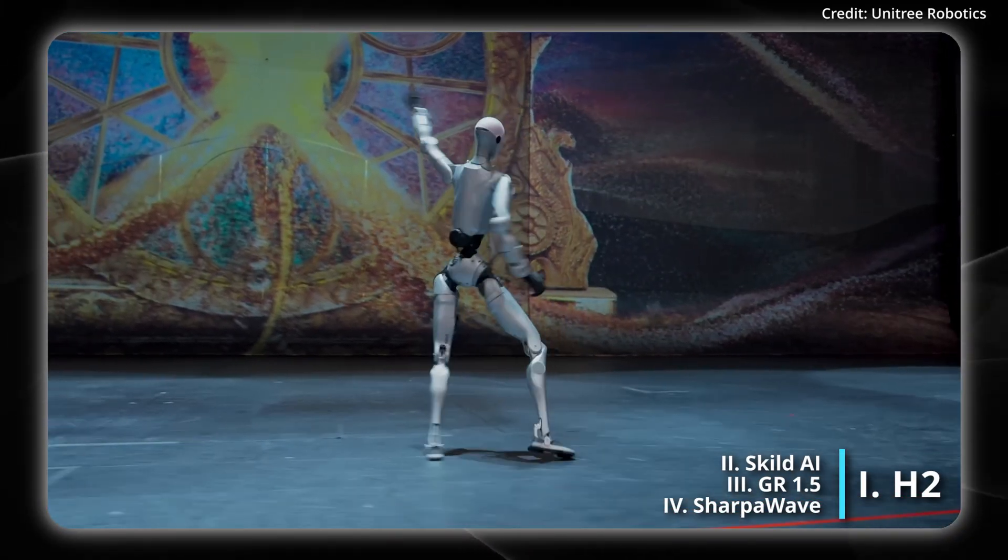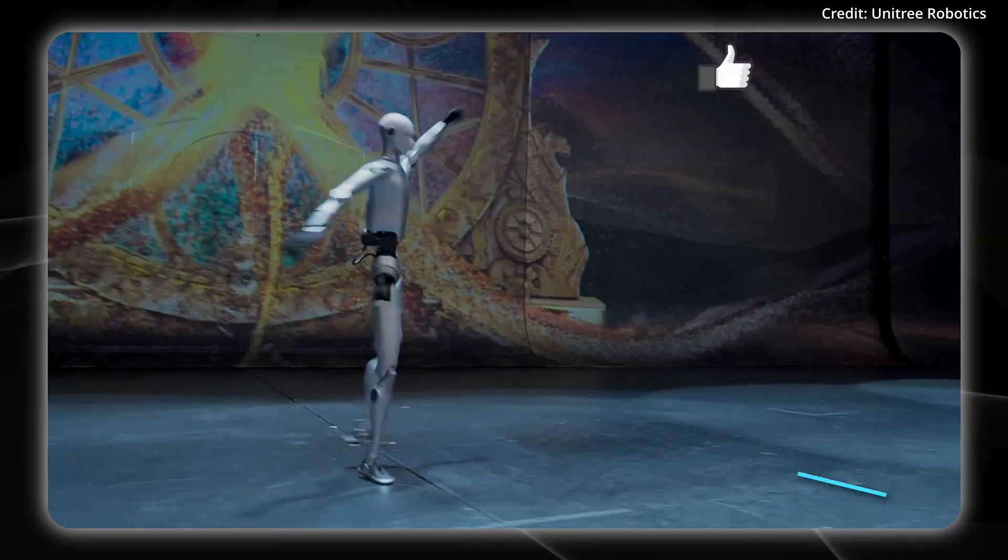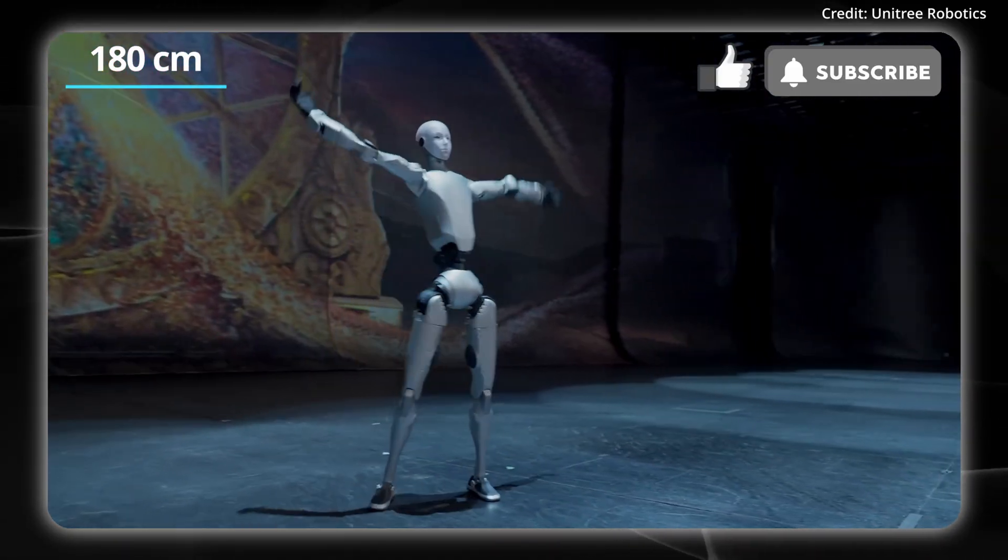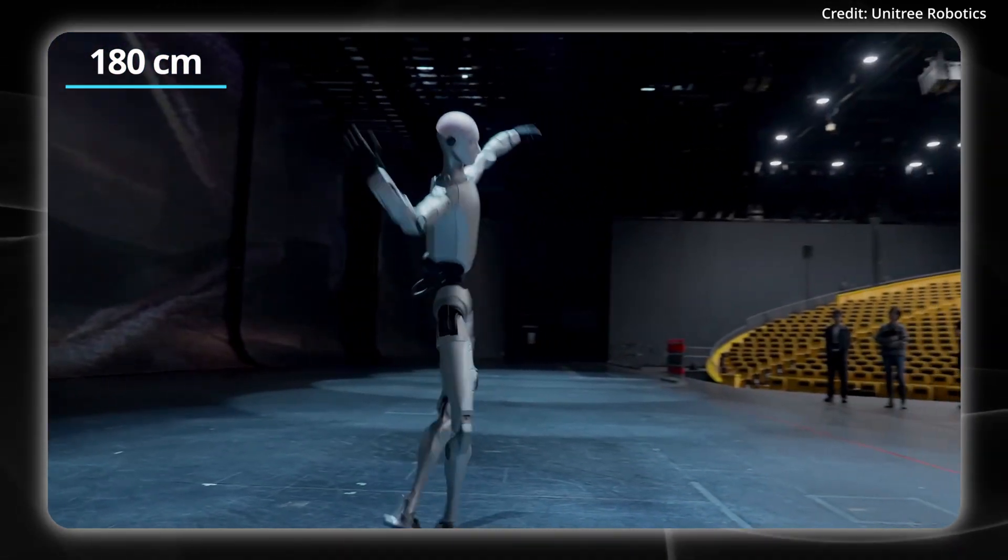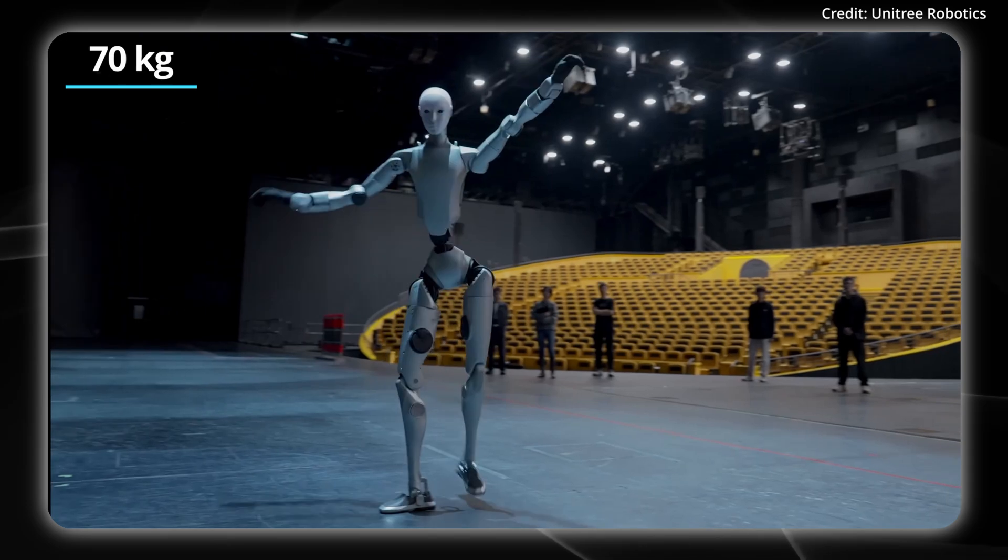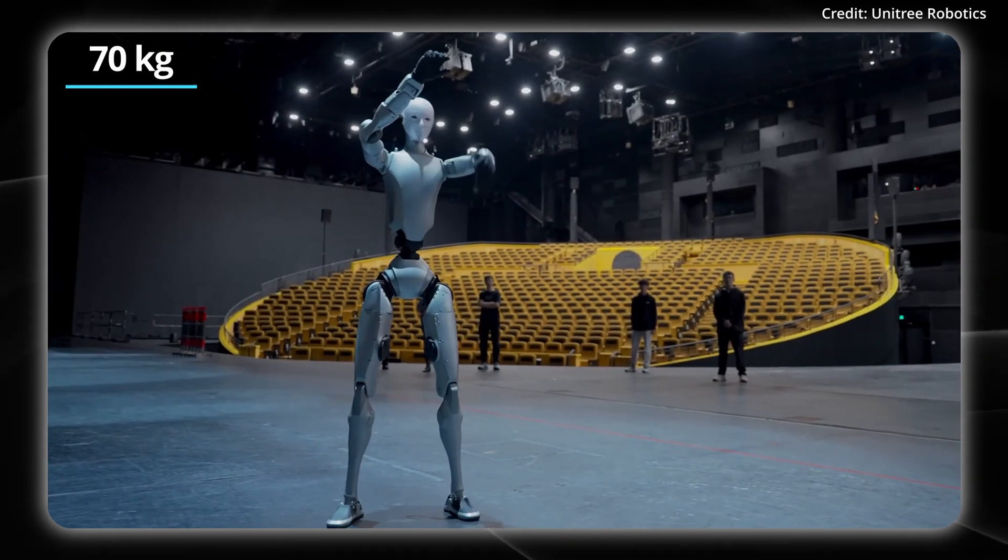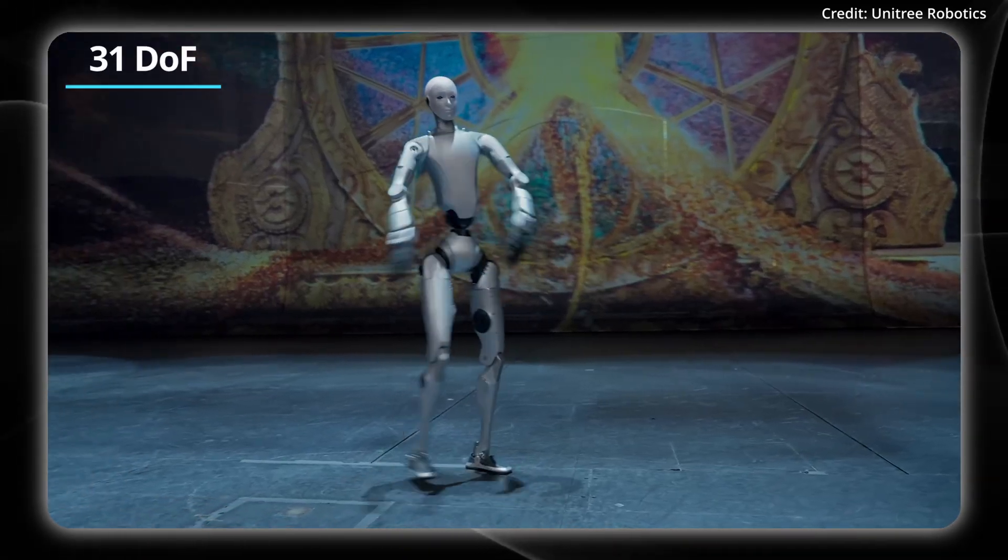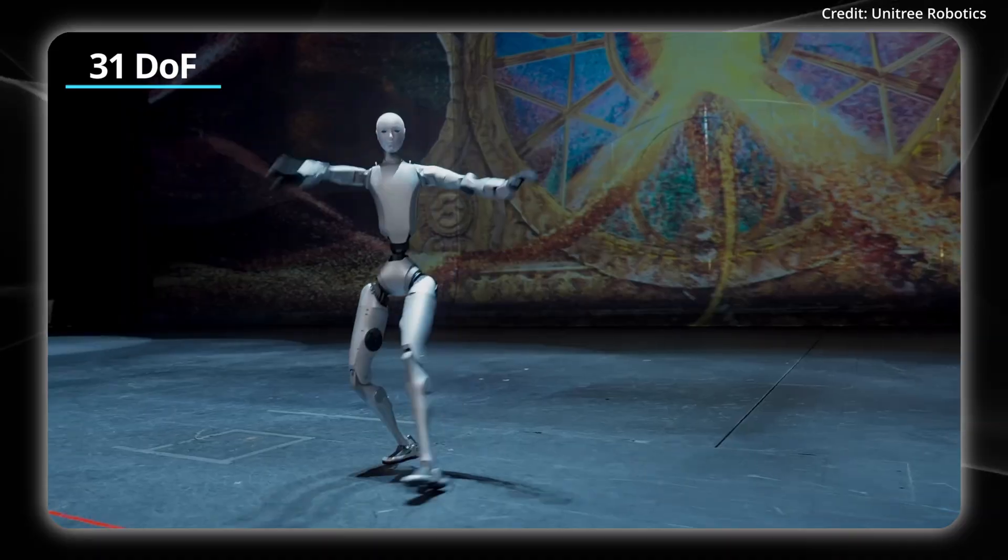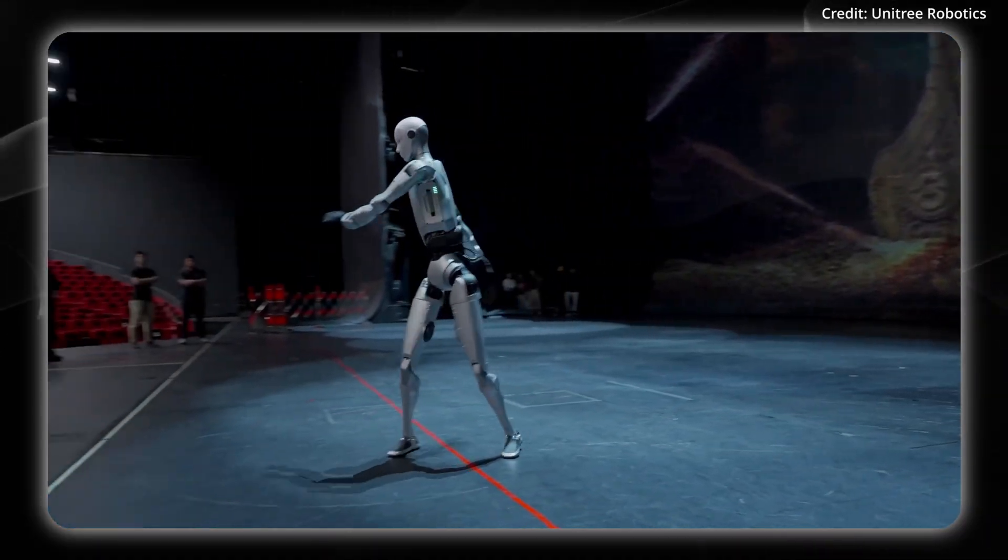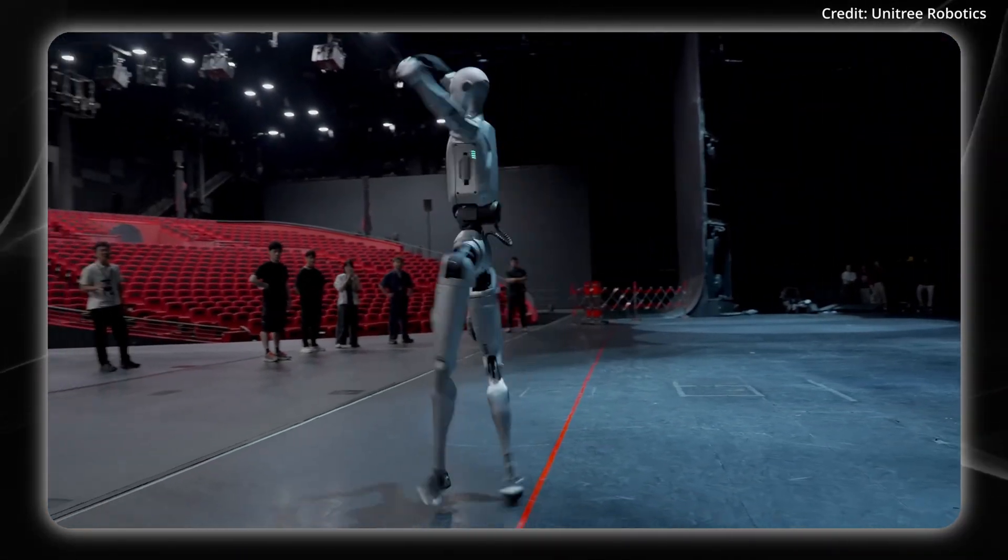First we're going to start out with Unitree's brand new H2 Humanoid. This stands at 180 centimeters tall, or 5 feet 11 inches, weighs 70 kilograms, which is about 154 pounds, features 31 degrees of freedom throughout its body. That's 19% more than the previous R1 model that was just released.